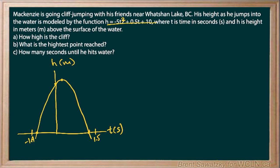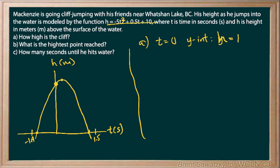Jotting some of this down helps clarify what's going on. For Part A, we're asked: how high is the cliff? Thinking this through — where on this graph is he standing on the cliff itself? That happens when time is zero, just before he jumps. That's in fact the y-intercept. From the graph, at t equals zero, the height is equal to 10 meters.